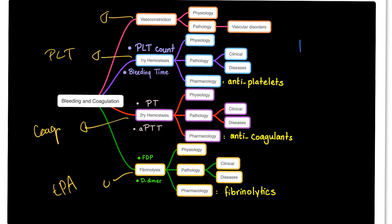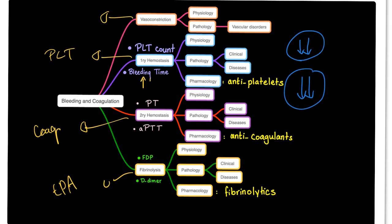One of them is called immune thrombocytopenic purpura, so the platelet count is low. The other is called thrombotic thrombocytopenic purpura, so the platelet count is low. So both of them will have low platelet count. When your platelet count is low, the bleeding time will be prolonged.